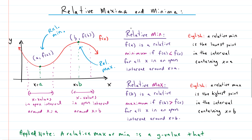Let's talk about relative maxima and minima. Maxima is just the plural of maximum — more than one of them — and minima is just the plural of minimum. We have a relative minimum here, which means it's the lowest point in the surrounding area, and here we have a relative maximum, which is the highest point in the surrounding area.